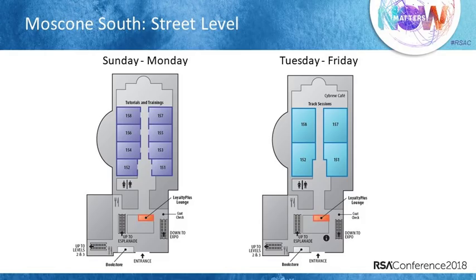We're going to look at Moscone South first. At street level, Sunday and Monday, if you're signed up for tutorials and training sessions, a number of them are taking place in Moscone South. We also have a Loyalty Plus lounge there for returning attendees, and a bookstore. From Tuesday through Friday, those rooms will flip into track session rooms.